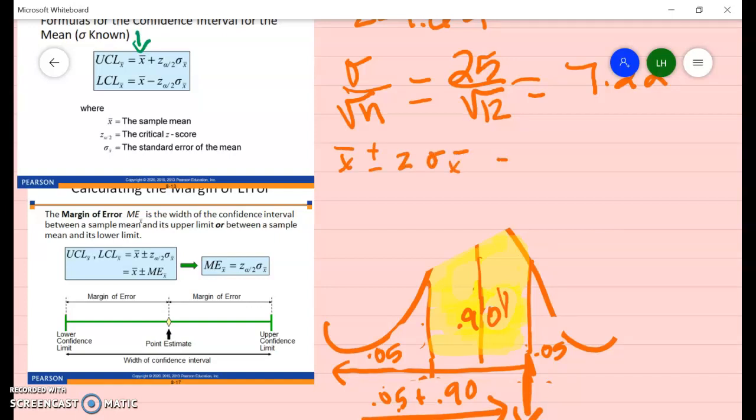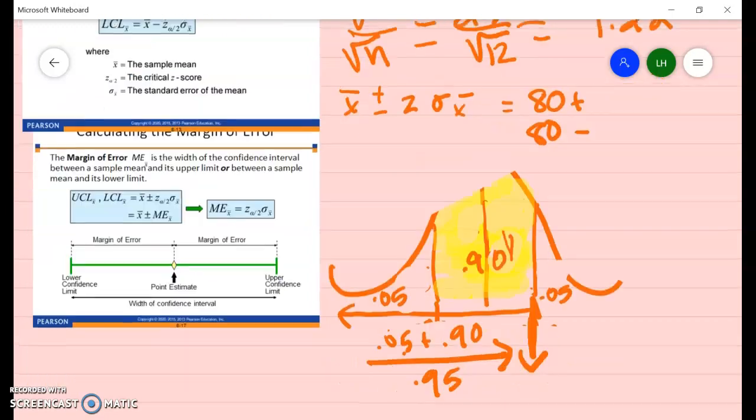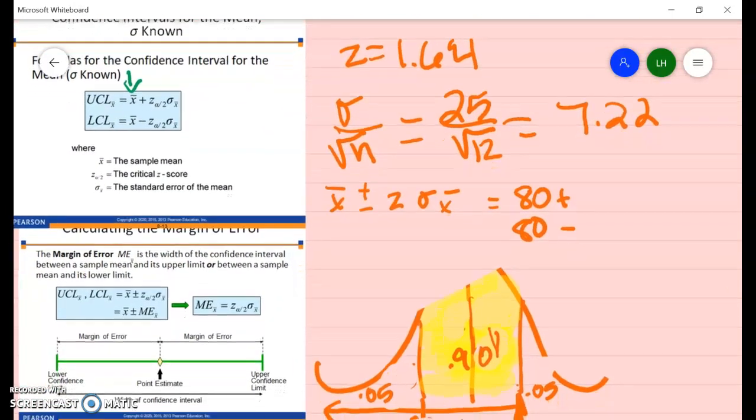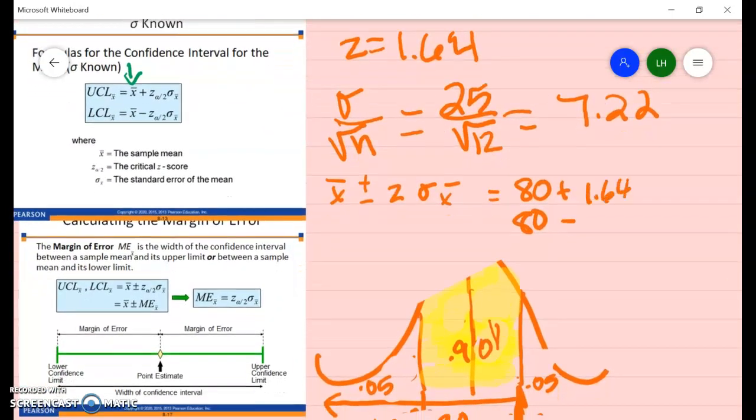So X̄ we said was 80. We're going to do plus and minus Z, which we said was 1.64 times 7.22.